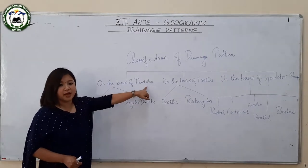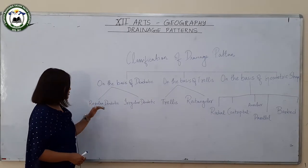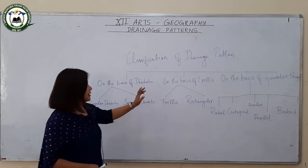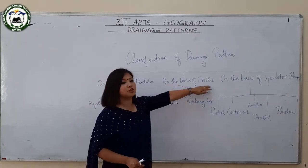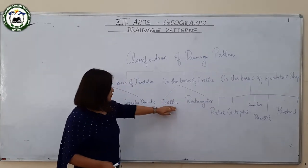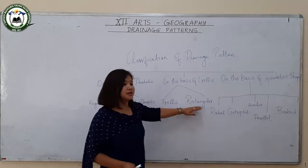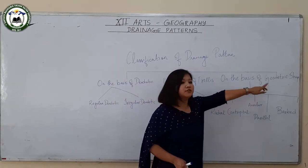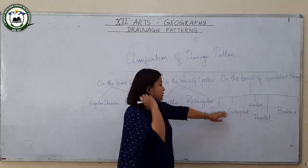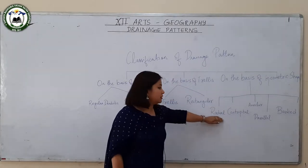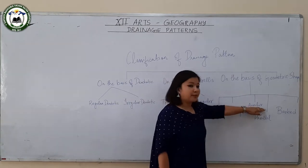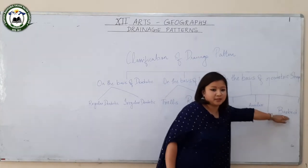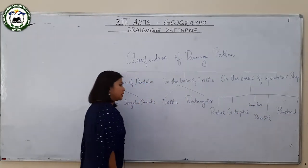Drainage patterns can be classified into three categories: first, on the basis of dendritic pattern, which is further classified into regular dendritic and irregular dendritic; second, on the basis of trellis pattern, subdivided into trellis and rectangular pattern; and third, on the basis of geometric shape, including radial, centripetal, annular, parallel, and barbed pattern.